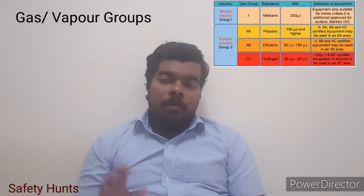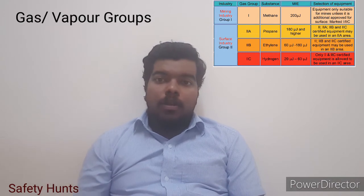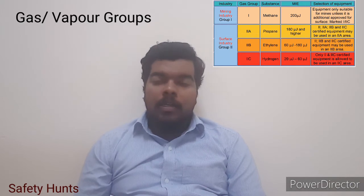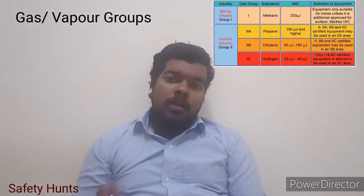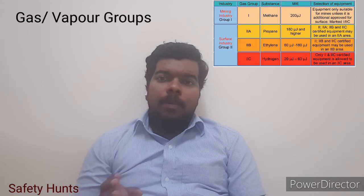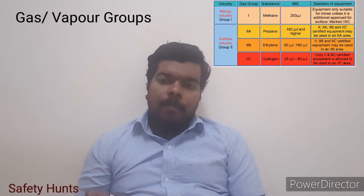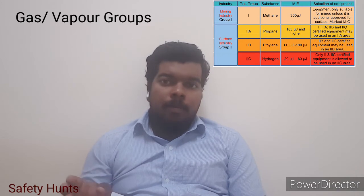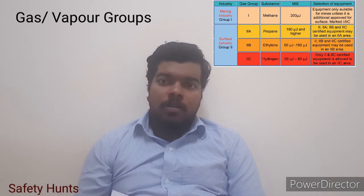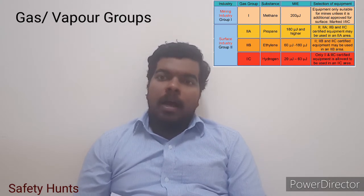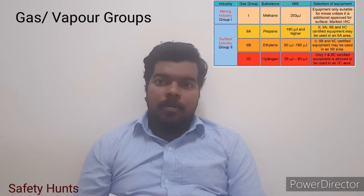Let's see the gas and vapour groups. Gas and vapour groups are further divided into three categories: 2A, 2B, and 2C. Under 2A, the gases like methane, ethane, and propane are included. Under 2B, gases like H2S — which is hydrogen sulfide — and ethylene are included. And 2C includes hydrogen and acetylene as the best examples.